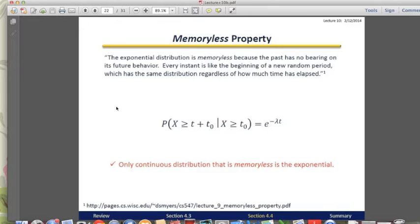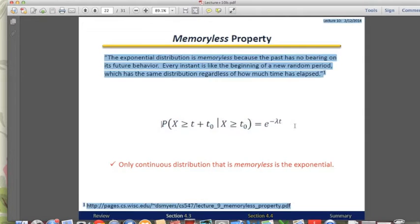The most important thing is that the exponential distribution has a memoryless property, which means the occurrence of a certain event does not depend on the occurrence of events happening in the past. So every instance is like the beginning of a new random period. So the distribution, regardless of how much time has elapsed, it has this property here.